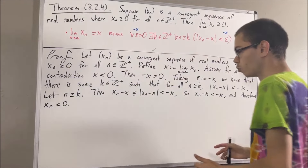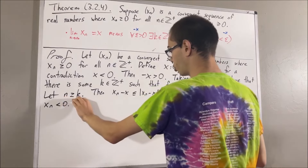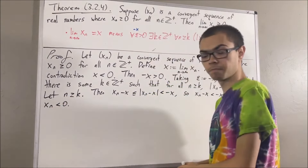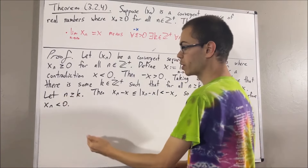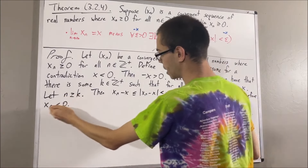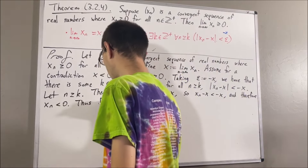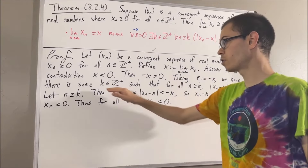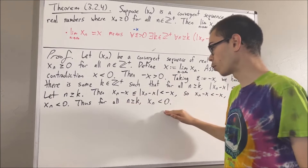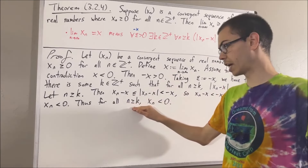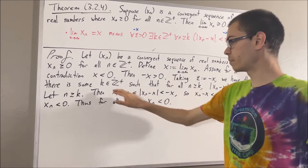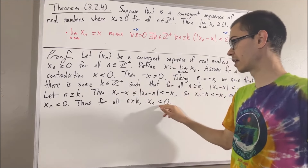So putting this together, we see that under the assumption n is greater than or equal to k, it follows that xn is less than zero. Since n was arbitrary, this means we have shown for all positive integers n greater than or equal to k, xn is less than zero. Now of course, k is greater than or equal to k, so taking n to be k, we have that xk is less than zero.